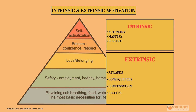Autonomy is the desire to direct one's own life — examples include flexible work hours, remote working, and self-managing. Mastery is about being able to improve and excel through self-development. Purpose is to understand the vision and contribute to be part of the journey towards achieving goals. Intrinsic motivation comes from within and involves personal satisfaction, while extrinsic motivation involves external rewards or consequences. Balancing both types of motivation is crucial for sustained success.